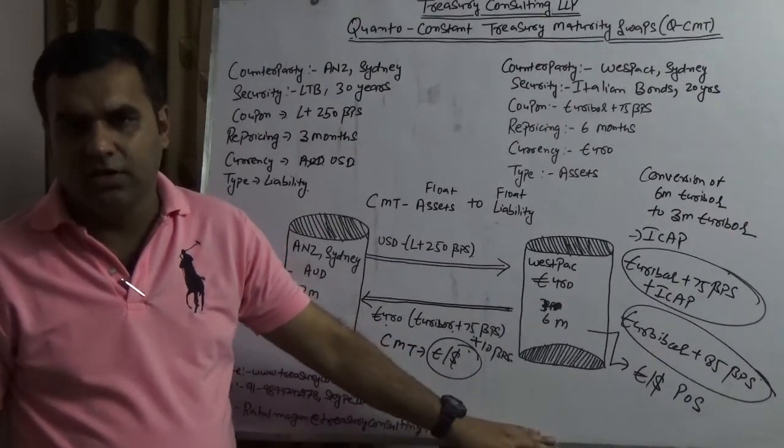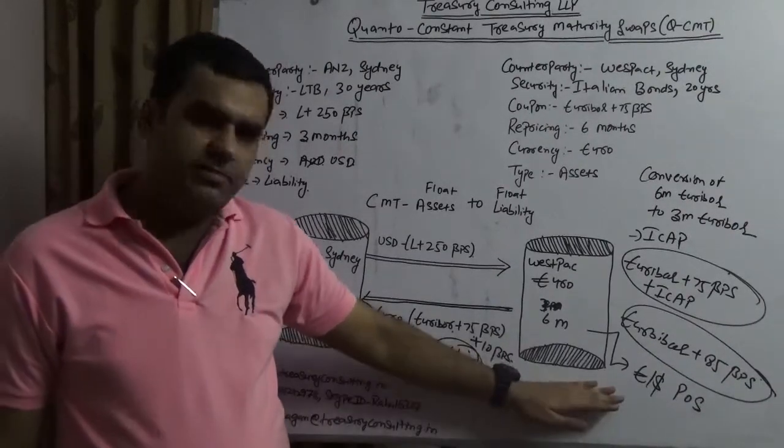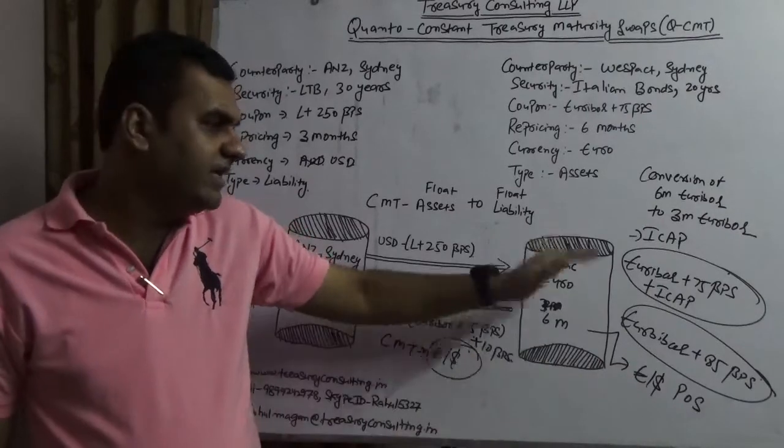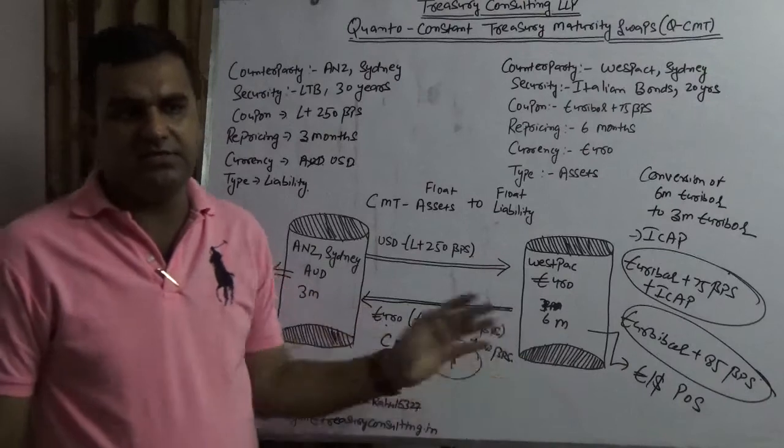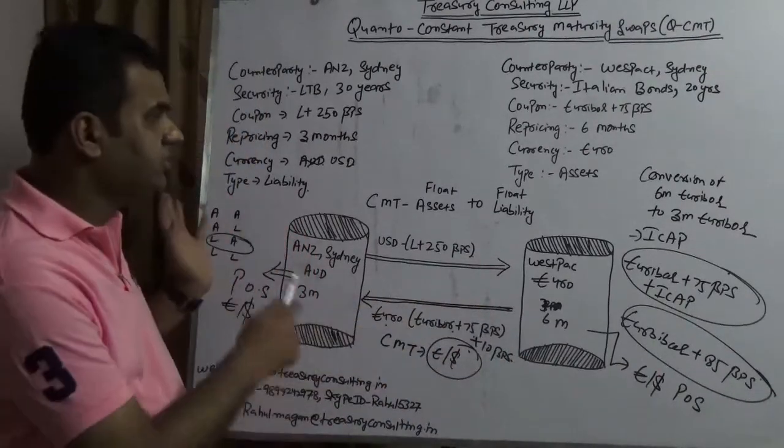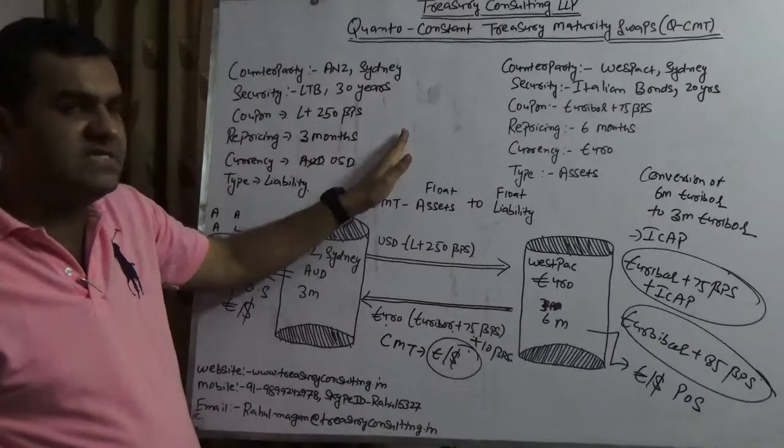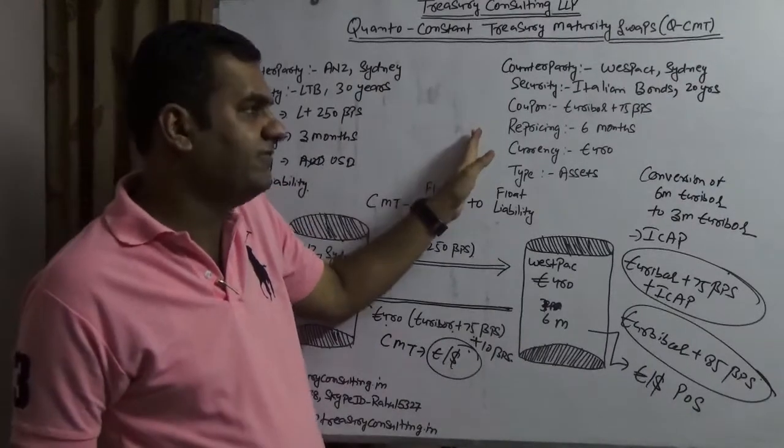Majority of the time, we tend to appreciate that the second party which is here is always a sovereign party. No, it is not always a sovereign party. Yes, it should be a triple-A party. Henceforth, I have deliberately chose the name Westpac, which is a triple-A party. And this is an example of how a Quanto CMT can be created in Australia, when one side you have ANZ Sydney and one side you would have Westpac Sydney.